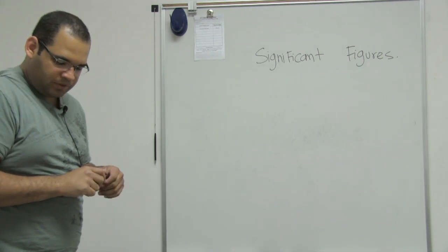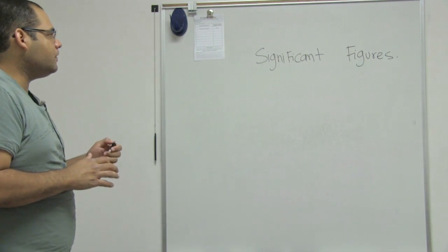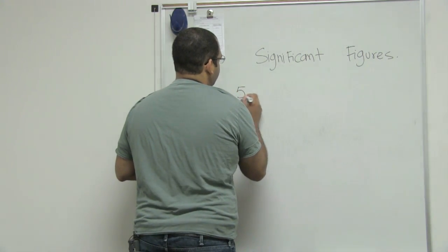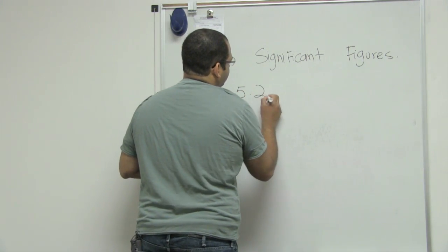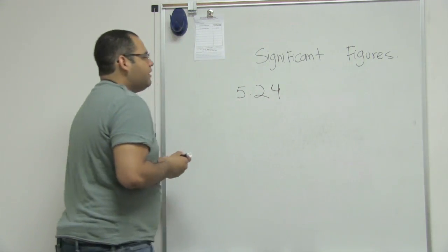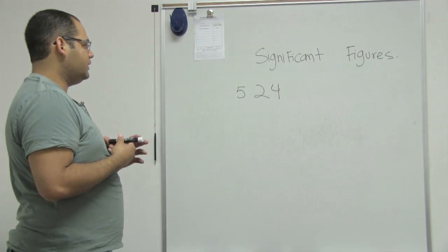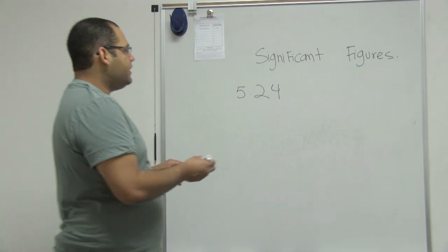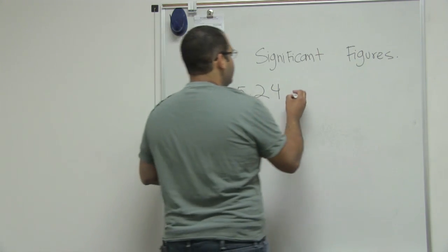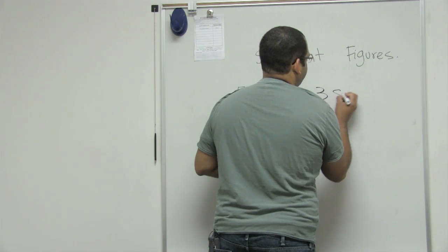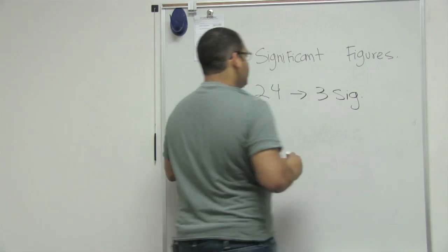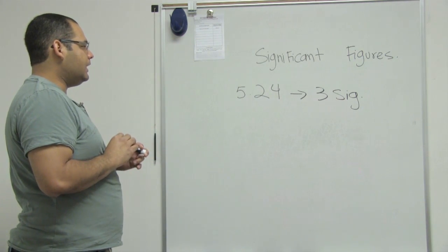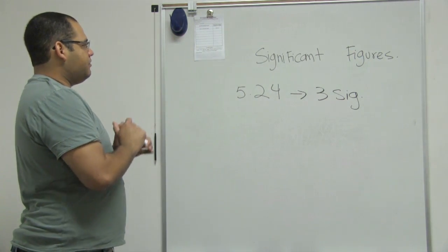The first rule is that non-zero numbers are always significant. For example, 5, 2, 4. We don't have a zero number there, so if I'm counting how many sig figs I have, I would say I have three sig figs. Non-zero numbers are always counted as significant figures.